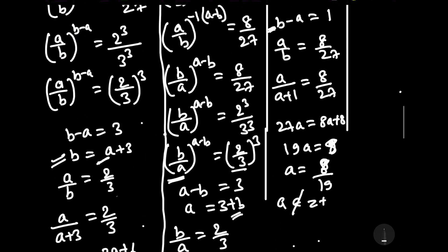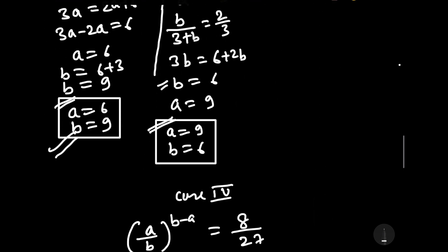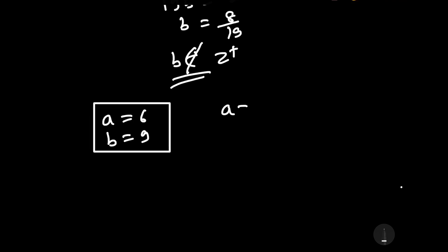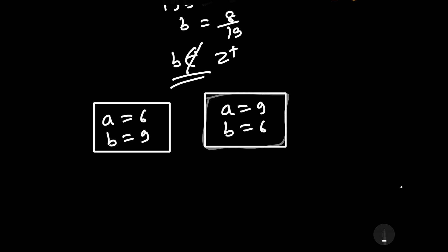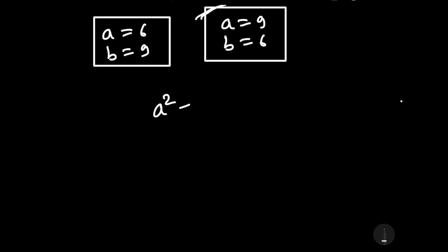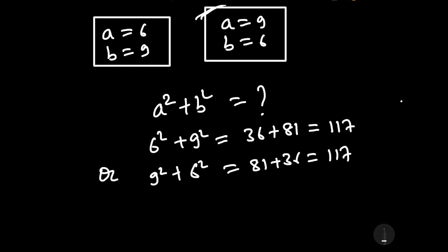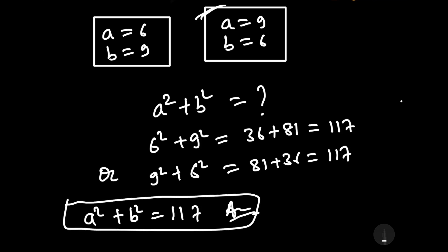We accept only case 1 and case 2: a equals 6 and b equals 9, or a equals 9 and b equals 6. We have to calculate the value of a squared plus b squared. Either 6 squared plus 9 squared or 9 squared plus 6 squared gives the same result: 36 plus 81 equals 117. Therefore, the value of a squared plus b squared is 117, and this is our required solution.